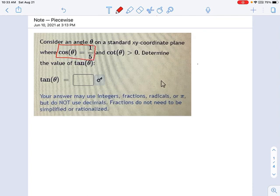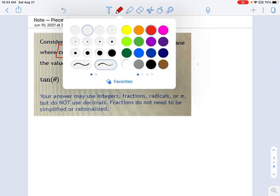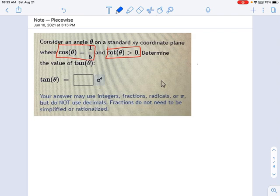So here are the two clues. Cosine of theta equals 1 over 5, and the cotangent of theta is greater than 0. We're asked to figure out what is the tangent of theta.